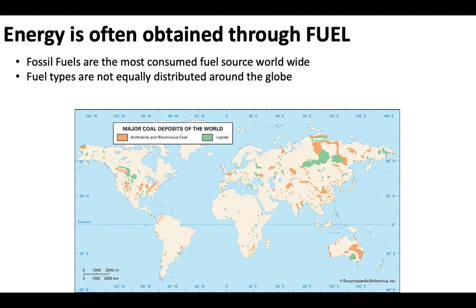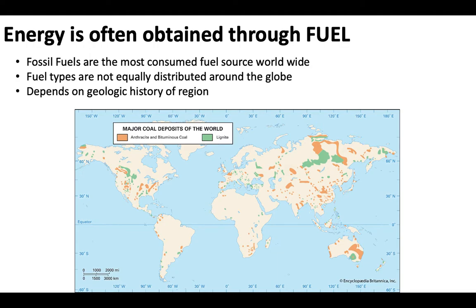These types of fuel are not equally distributed around the world. This map shows where most of the coal is found. There's a decent amount in the United States and Canada, a lot in Russia, China, and parts of Australia as well. Meanwhile, places like Brazil, Northern Africa, and Northern Europe have no coal at all. That's going to change the way communities and populations adapt to energy usage, depending on the geologic history of the region — volcanic activity, plate tectonics, et cetera.